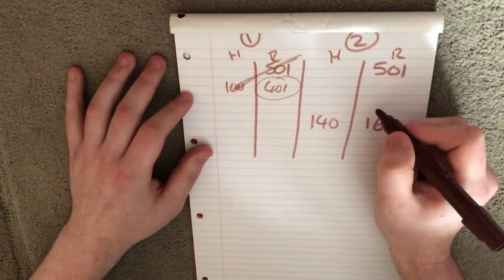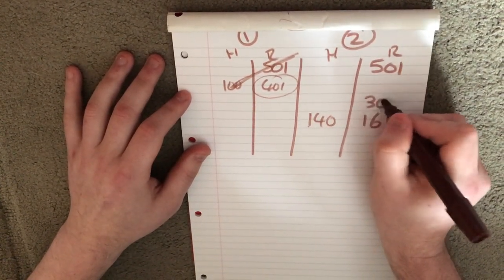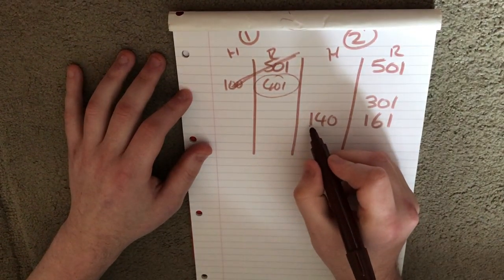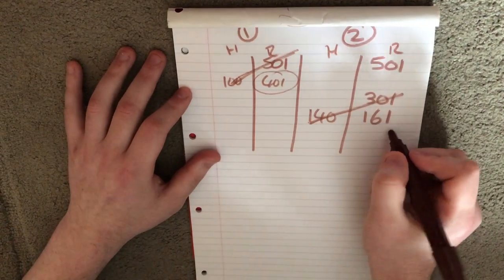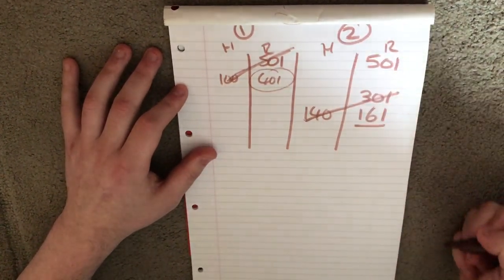So that's why we put a line through here where we cross from the hit score through to the previous score, which will then highlight the score that we should be going for here, which is 161.